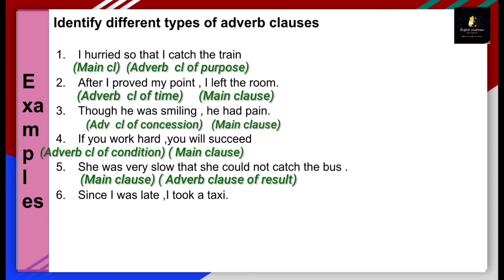Final example: 'Since I was late, I took a taxi.' Why did I take a taxi? Since I was late — adverb clause of reason. 'Since' works like 'because' here. Note that 'since' can also appear in adverb clauses of time. Whether it indicates time or reason depends on its use in the sentence.